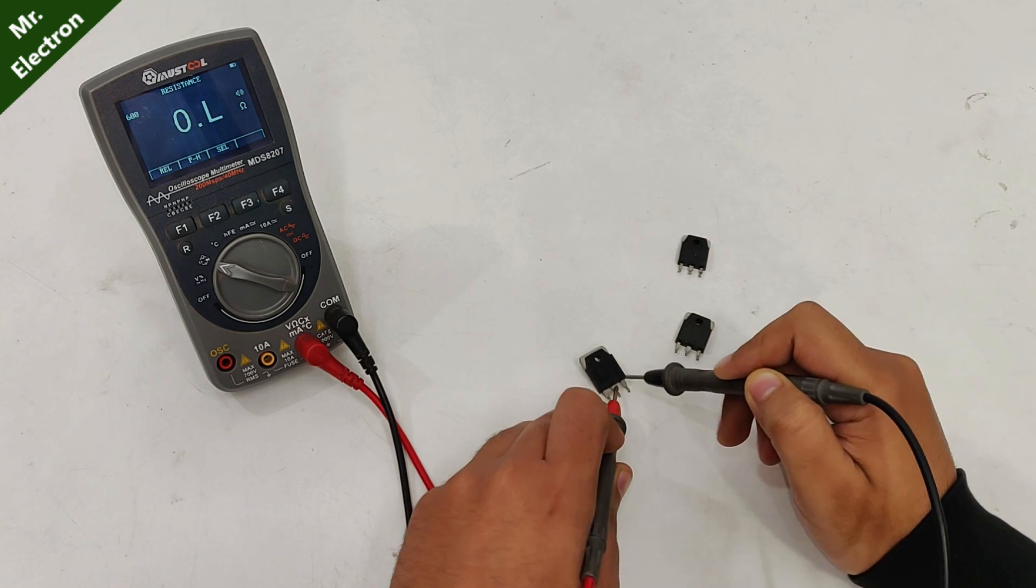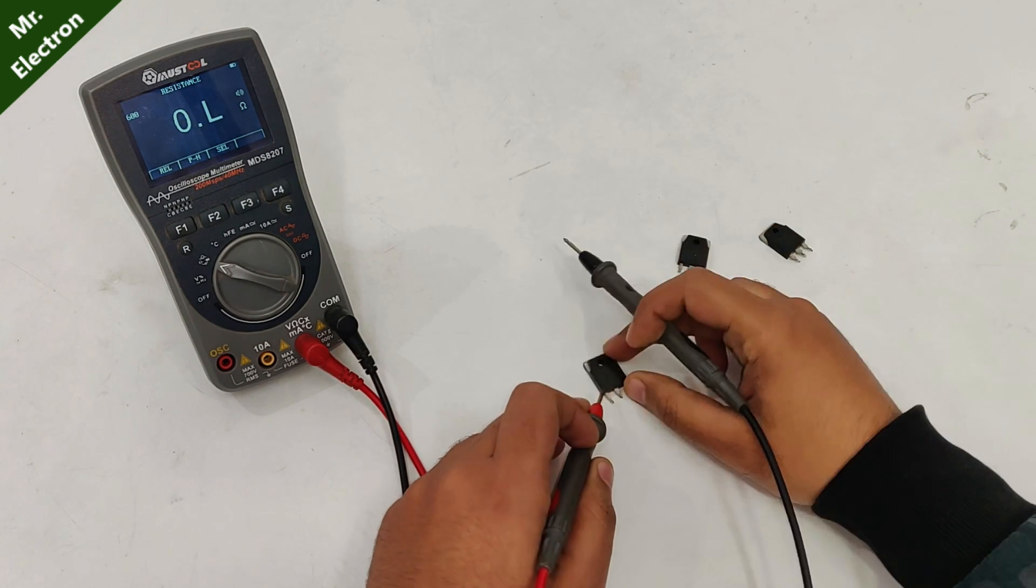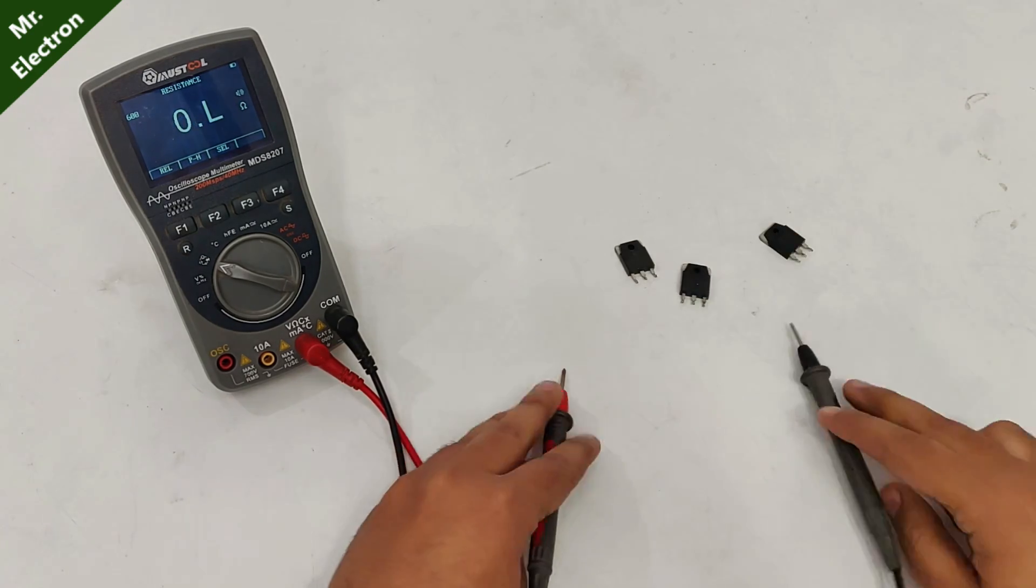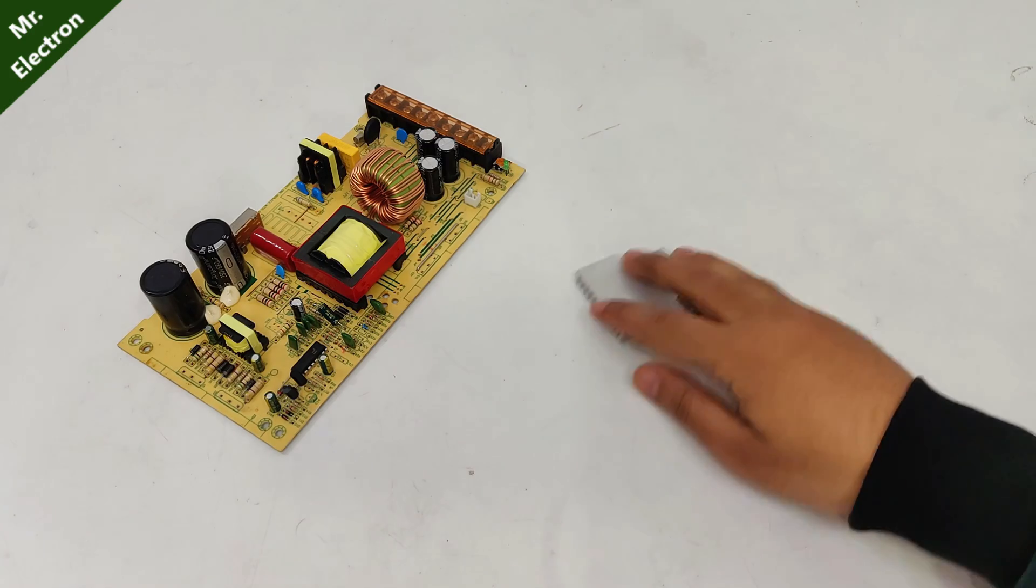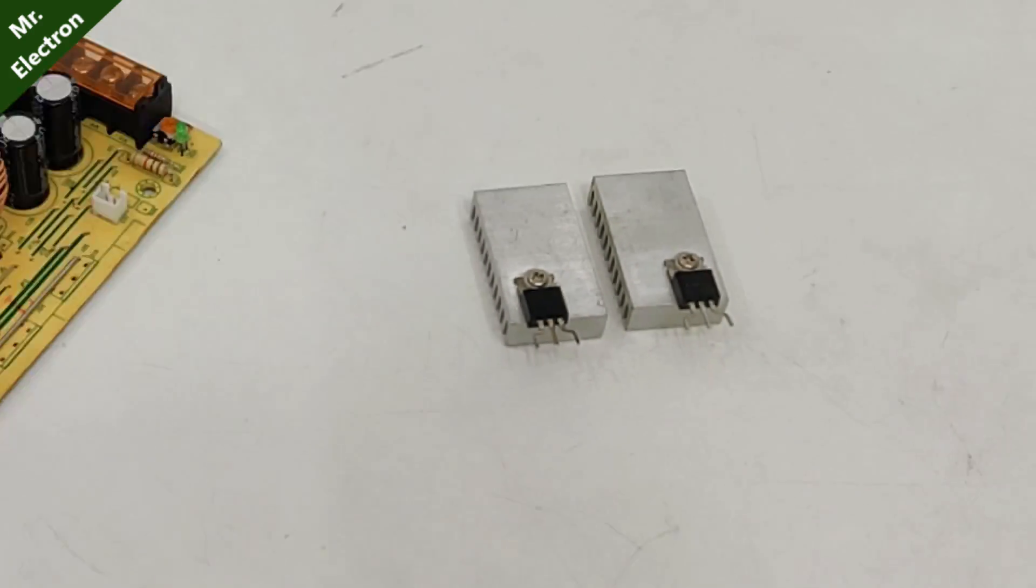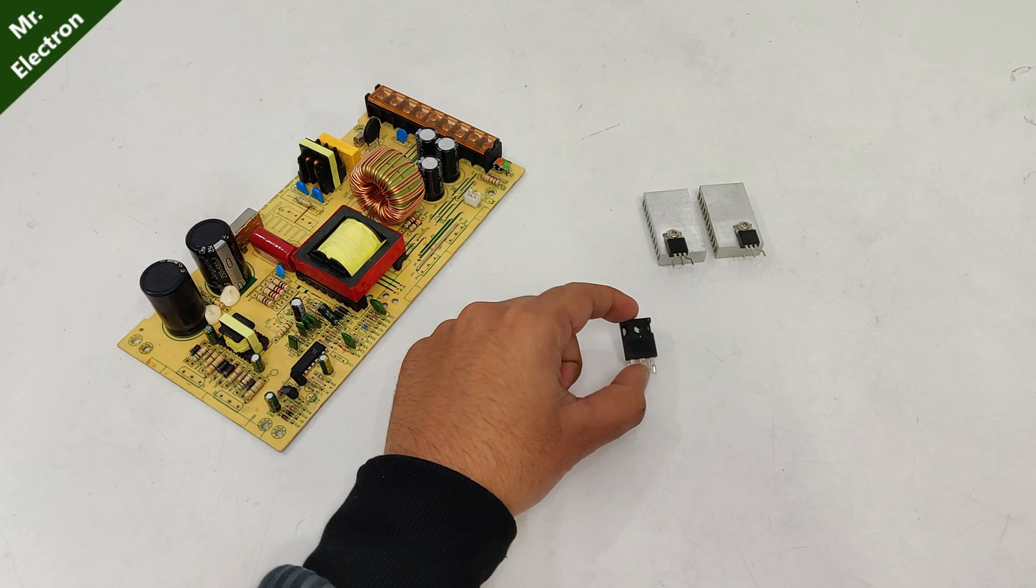As you can see, all the three components are completely short. Now, just for finding out if the rest of the circuit is fine, I'm going to replace these with these two small 13009 transistors and this high speed rectifier.